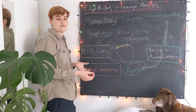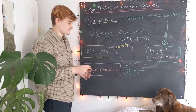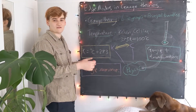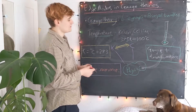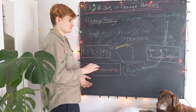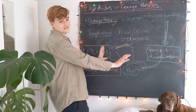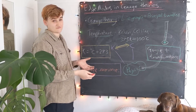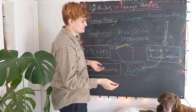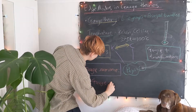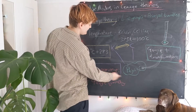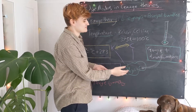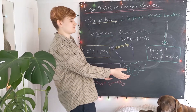Gauge fields themselves are somewhat meaningless in isolation — what's more meaningful is the gauge transformations, which tell us that gauge fields are equivalent and describe the same physical reality. Gauge invariance is an example of a symmetry: physics should be symmetric under any choice of gauge. Changes of gauge, i.e., gauge transformations, should leave physics the same. That's what we mean by a gauge symmetry.